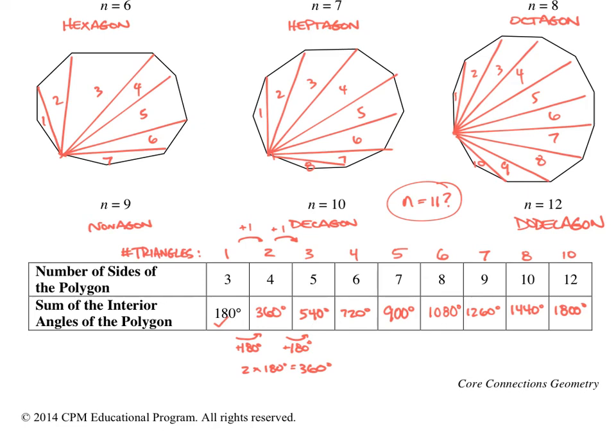Again, notice that pattern. The number of triangles that can be made out of that polygon is always two less than the number of sides. So, for example, let's take a look here at the octagon. The octagon, eight sides, can make six triangles. That's 2 minus 8. If you do 6 times 180, you get 1080. So that's one pattern I notice.